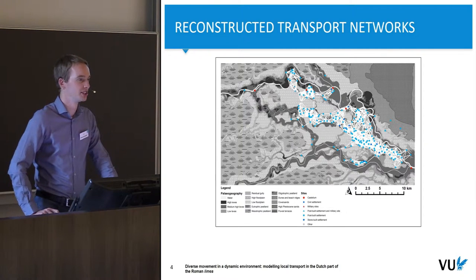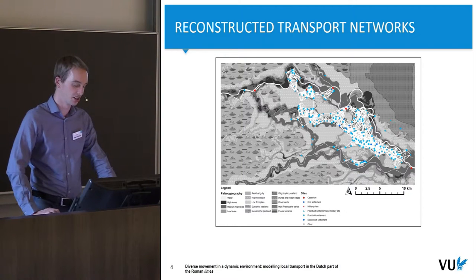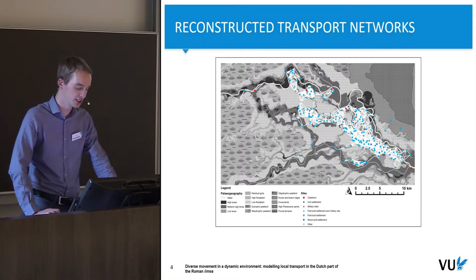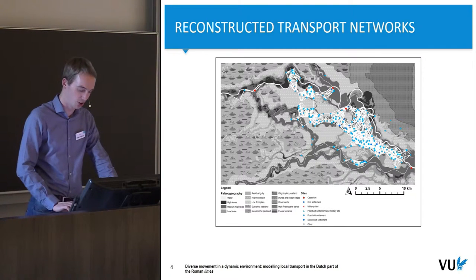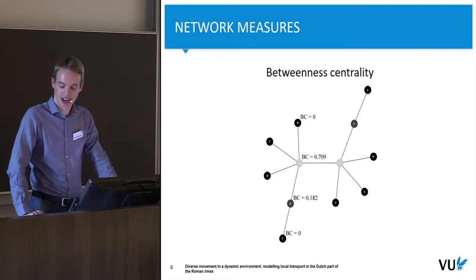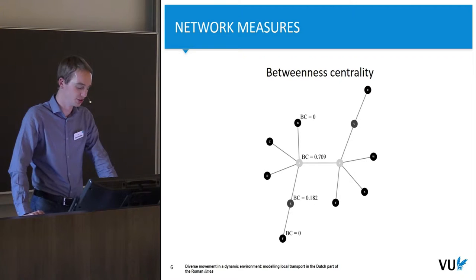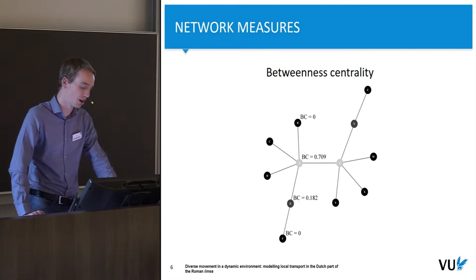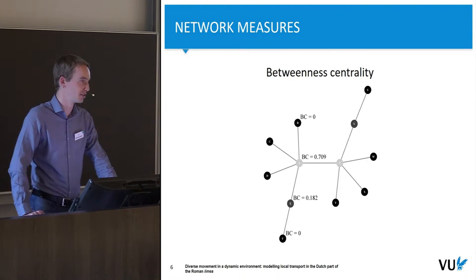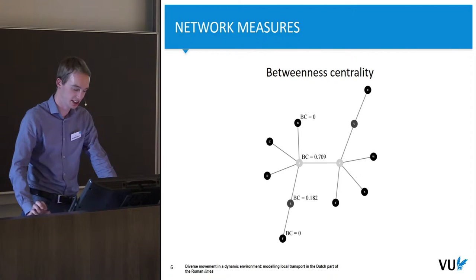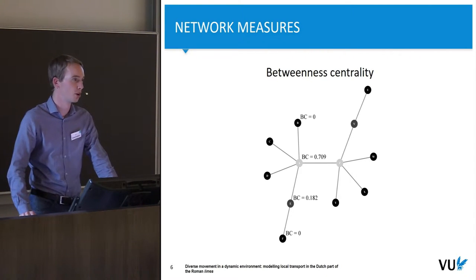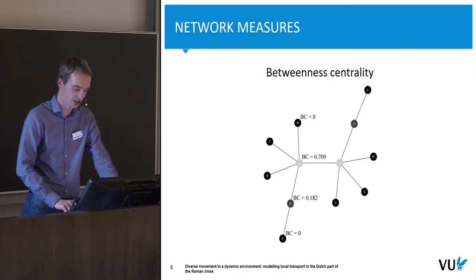Our starting point, where I finished in my previous presentation, is the reconstructed transport networks. They are reconstructed least cost paths of various transport modes, and the straight lines in this image are simplified representations of these modeled least cost paths. A main example of a network measure is betweenness centrality, which measures the amount of paths that pass through the node being analyzed. The node located in the center has very high betweenness centrality because it controls all movement over the network from nodes on its left side towards those on the right side and vice versa.